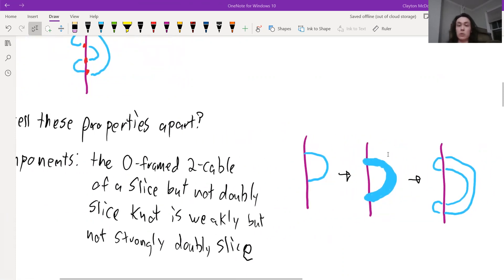So why is it weakly doubly slice? Well, we can take the disk, we can take a neighborhood of it, we can take the boundary of that disk. We'll get this zero framed two cable. But in particular, we also get this nice sphere which we know is unknotted because there's this natural ball that it's the boundary of.